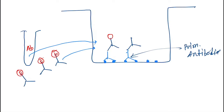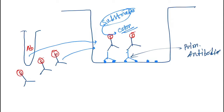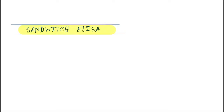Again we add a substrate which reacts with the enzyme and forms a color — this is the positive test result. That is how Indirect ELISA is done.